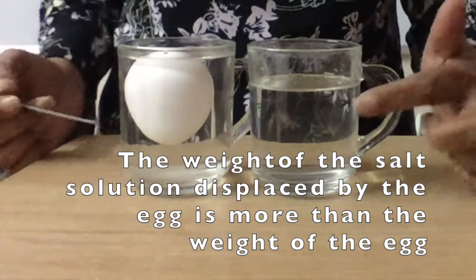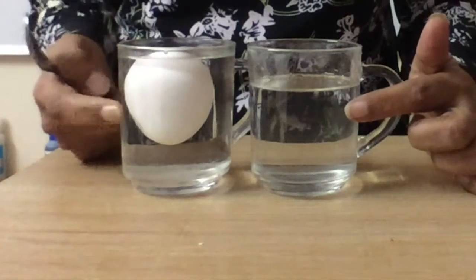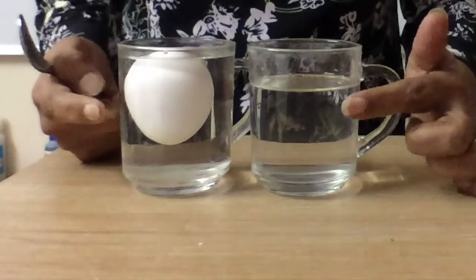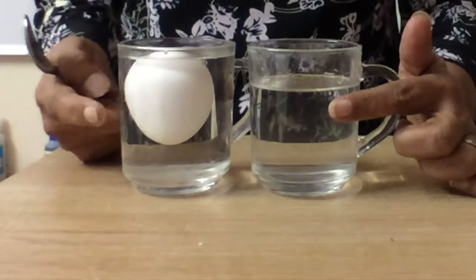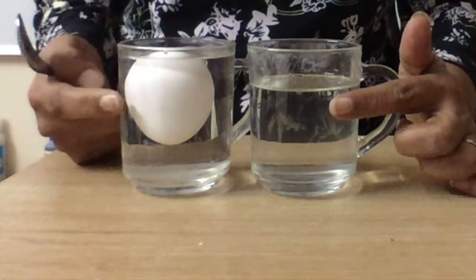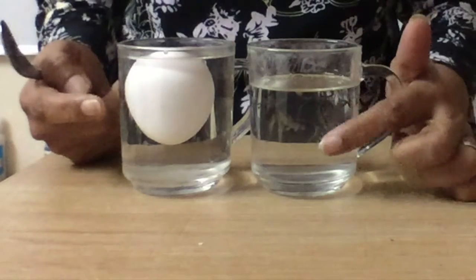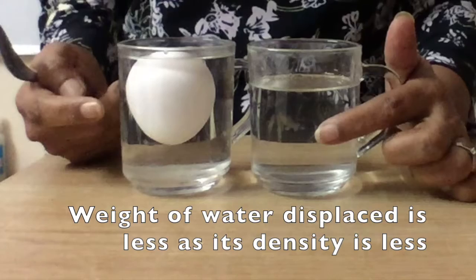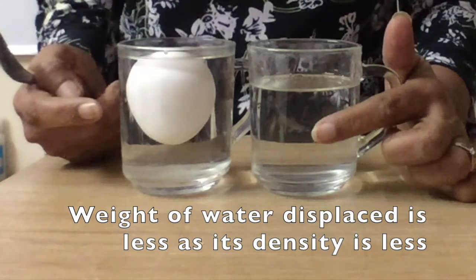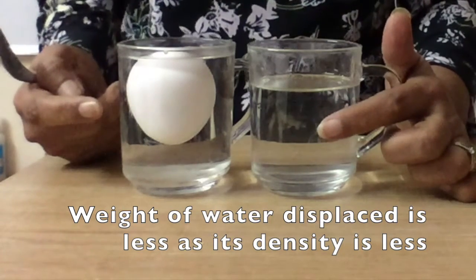In this water as well as this salt solution, the volume of the liquid displaced is the same. It is the same as the volume of the egg. But the weight of the water displaced was less here because water has density 1 gram per centimeter cube.